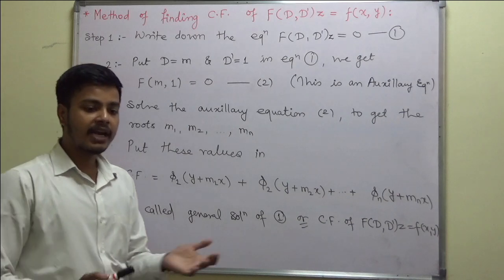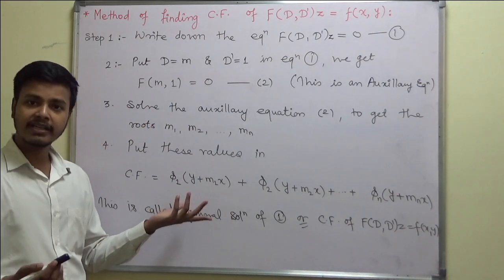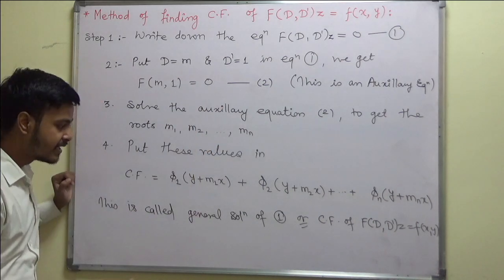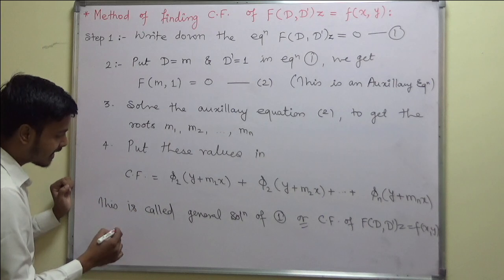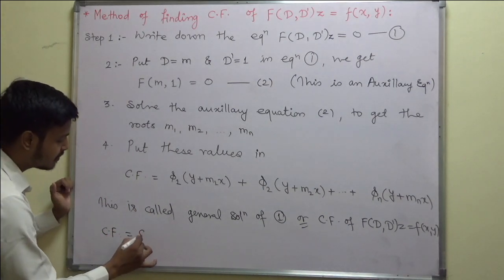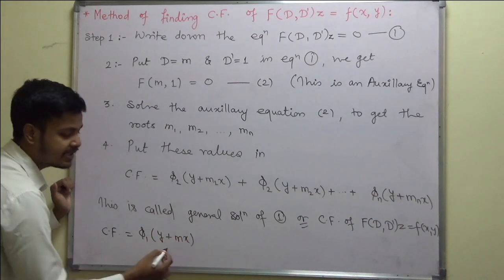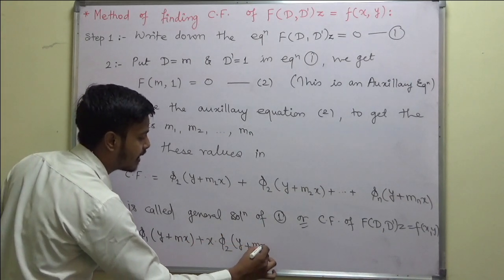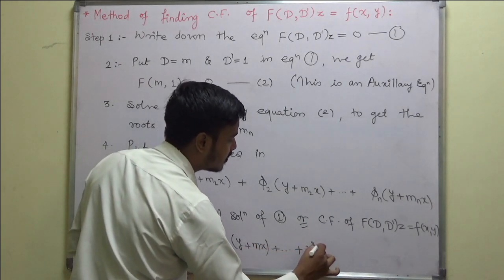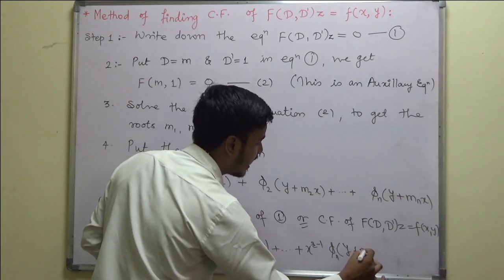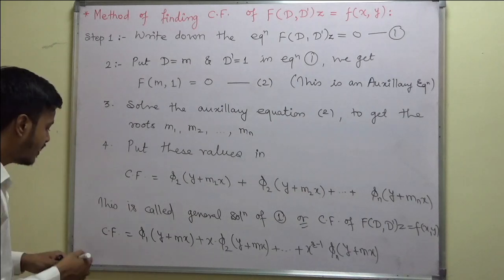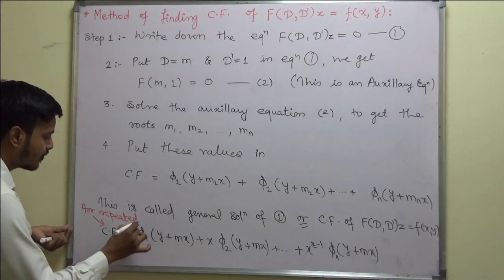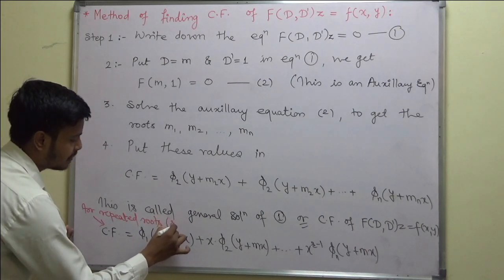Now, it may happen that the roots get repeated r times. Suppose we have roots m, m, m repeated r times. Then your CF would be: CF equals φ₁(y + mx) plus x·φ₂(y + mx) plus and so on, plus x^(r−1)·φᵣ(y + mx). This is the complementary function for repeated roots repeating r times.